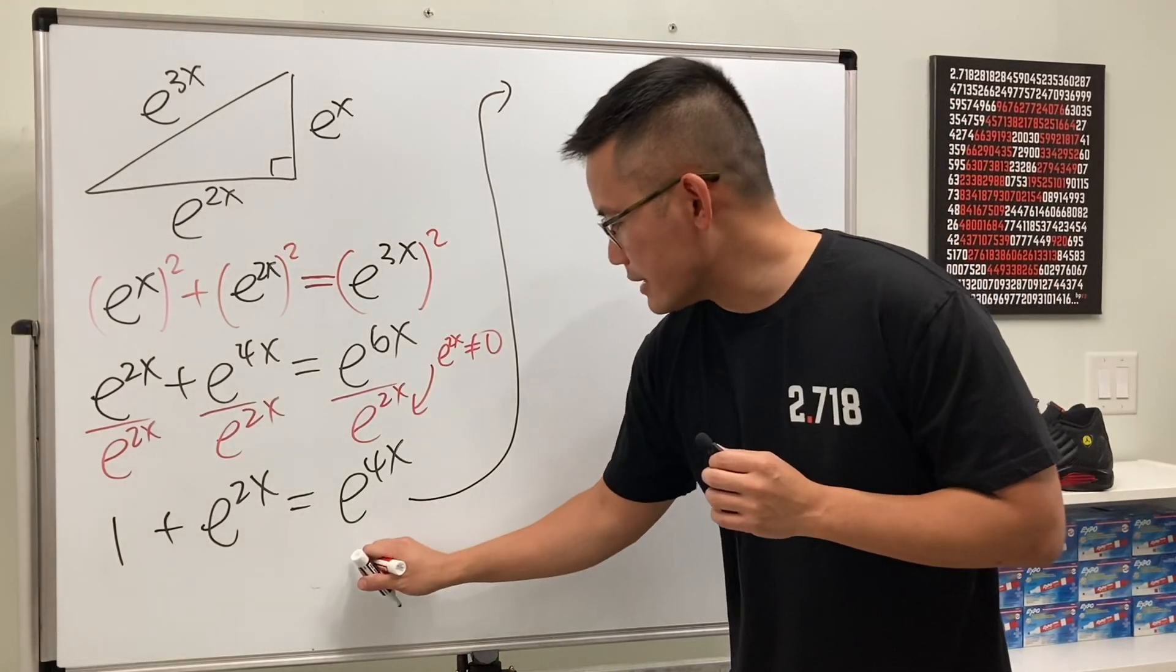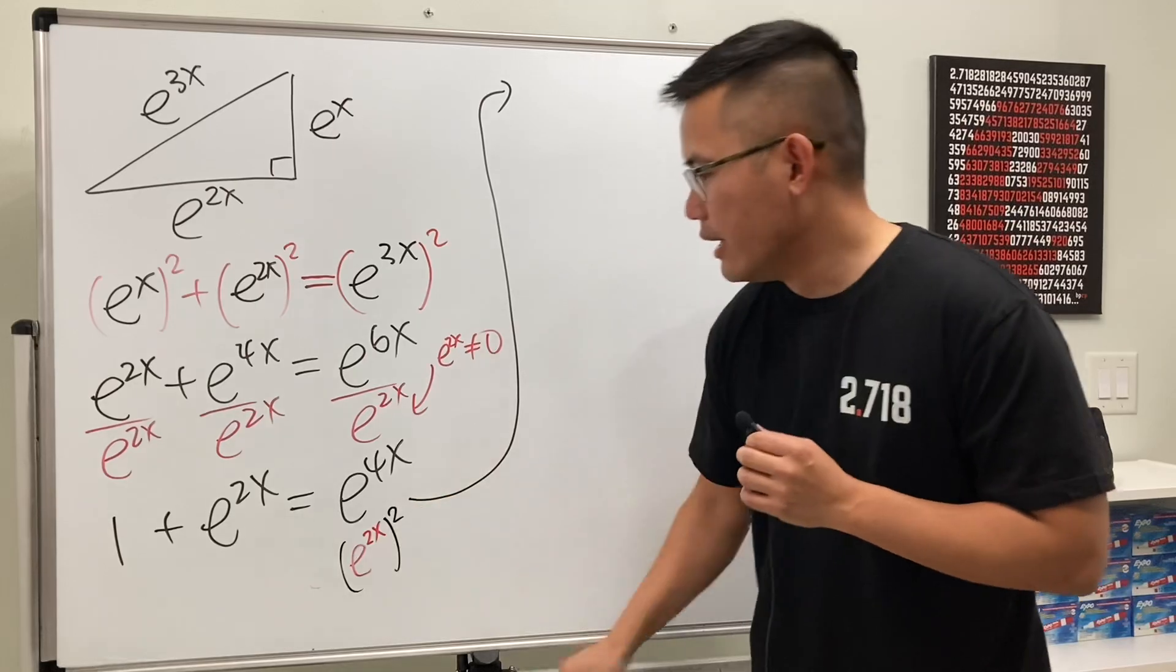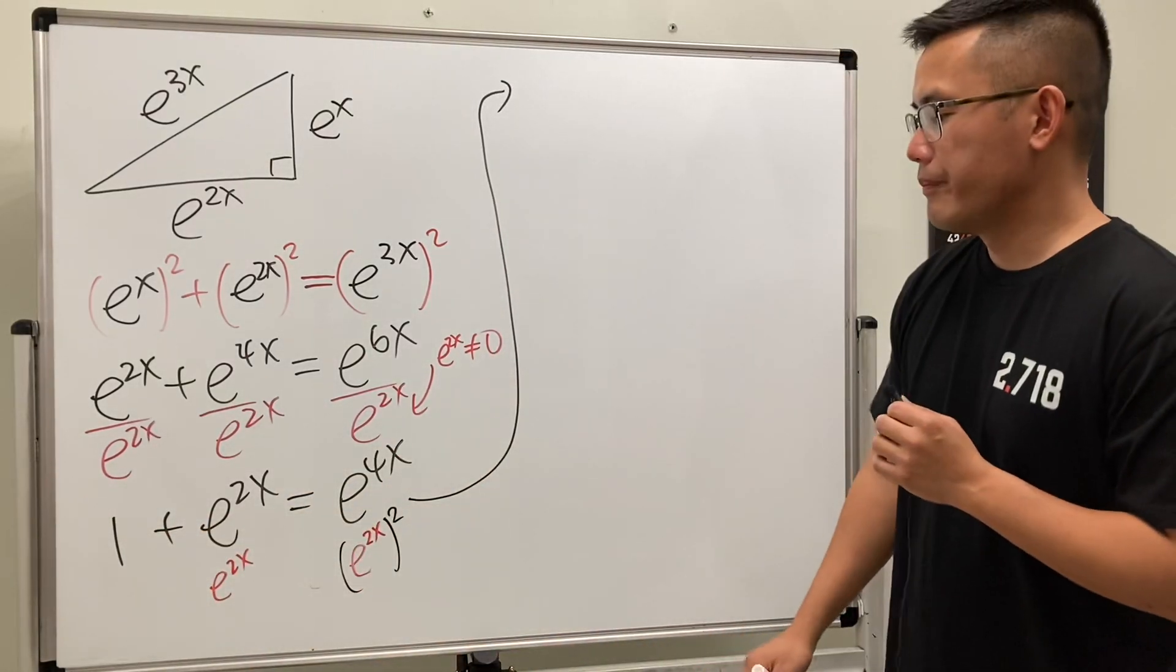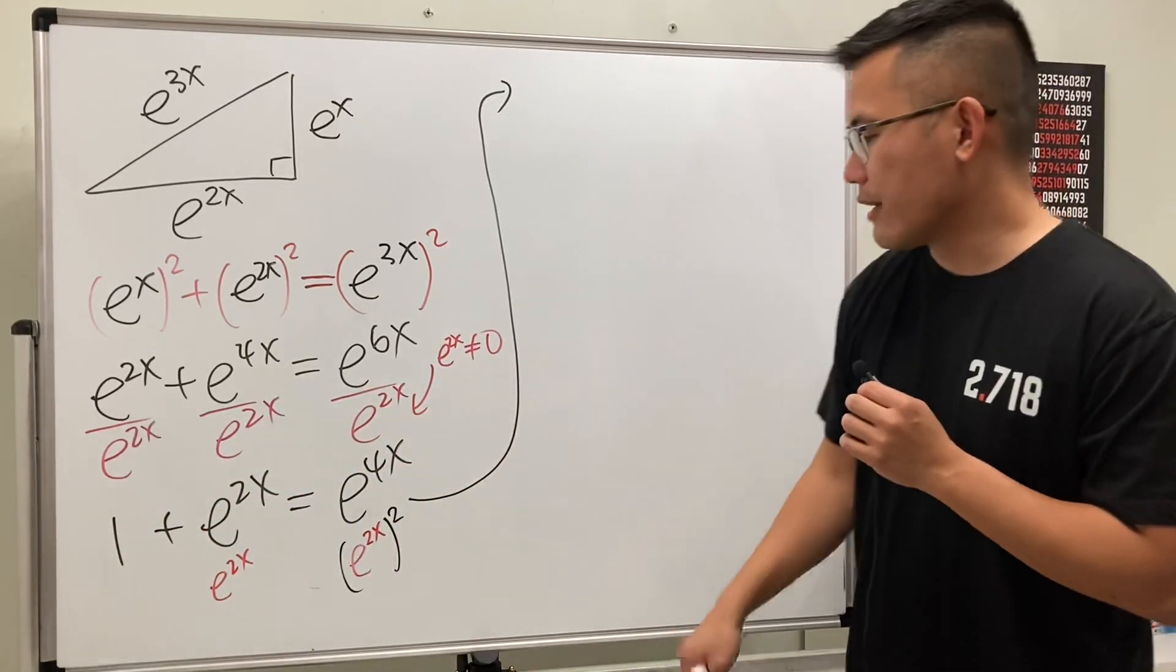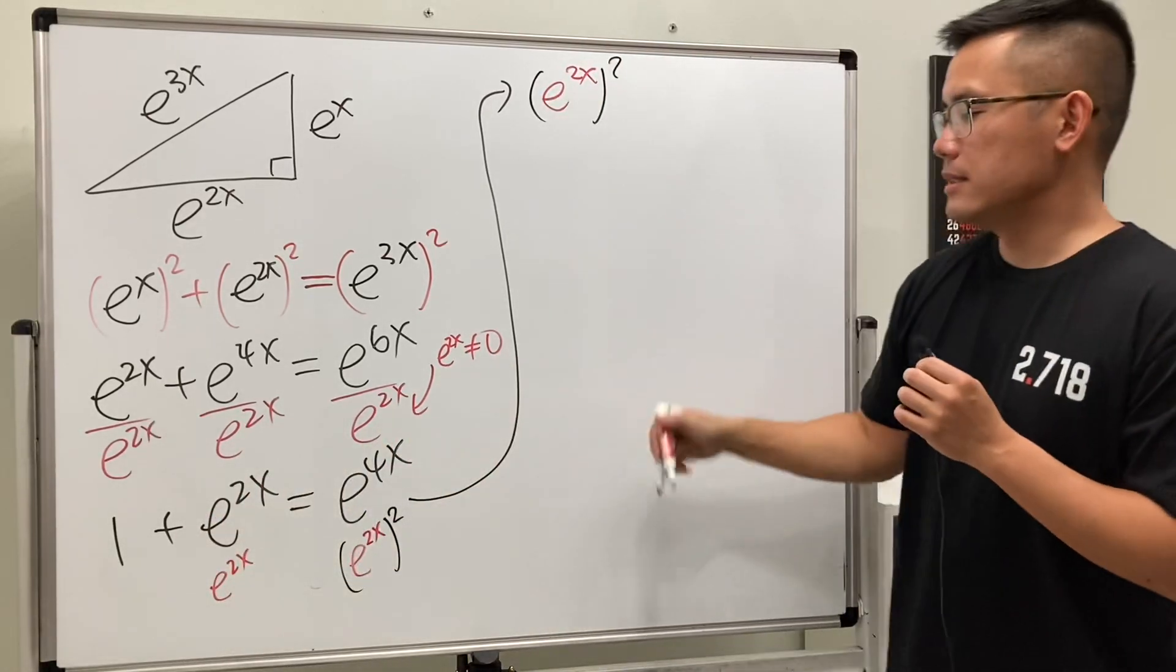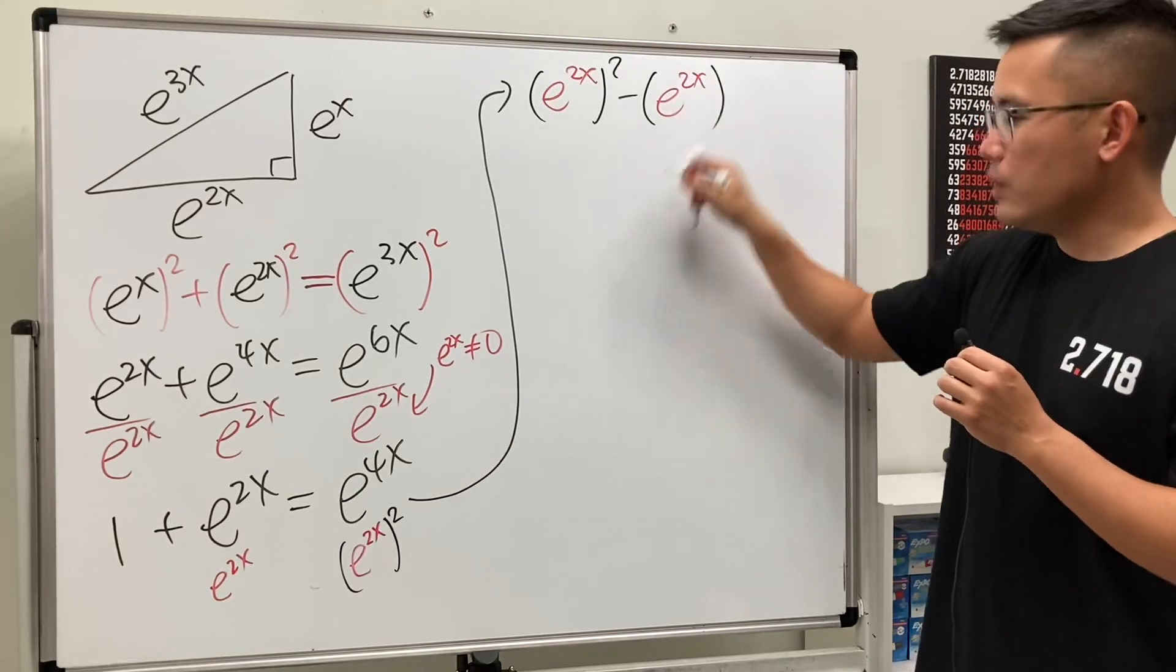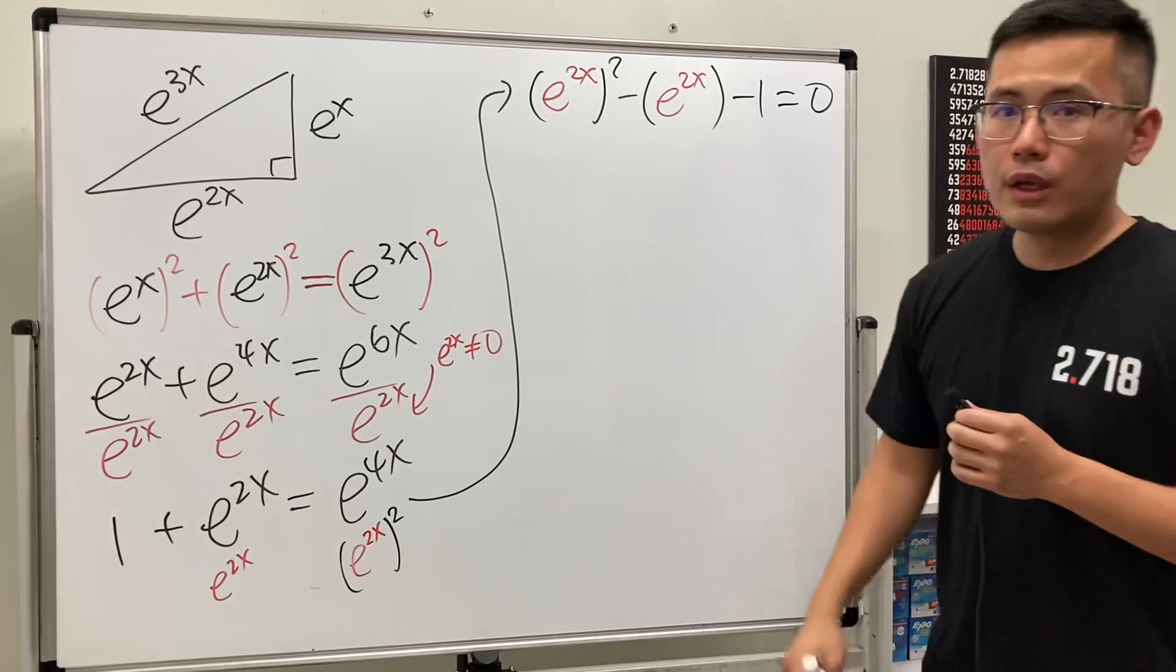Because this right here, it's the same as saying e to the 2x and then square, and this right here is of course e to the 2x, and then of course over there we have one. So I'm going to just move them to the other side and let's write this down first. So we look at e to the 2x and then square, and then minus, and we have e to the 2x, and then we have a minus one, and that's equal to zero.